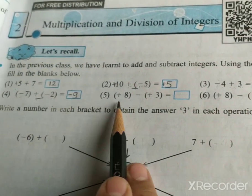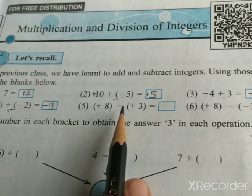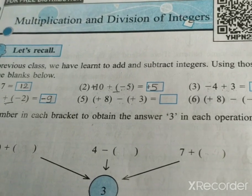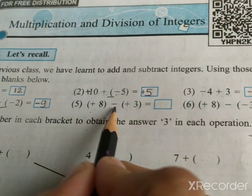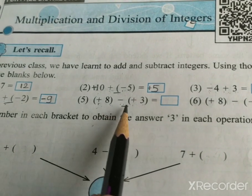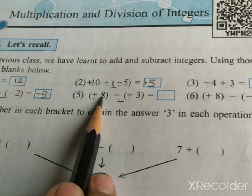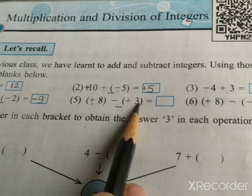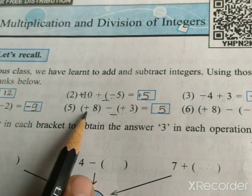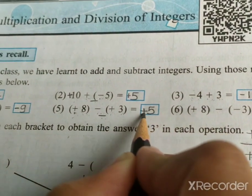Question 5: plus 8 minus, in bracket, plus 3. Minus and plus gives negative. So the symbol becomes minus. 8 minus 3 is equal to 5. The bigger number is 8, and the symbol of this number is positive. Therefore, our answer is plus 5.